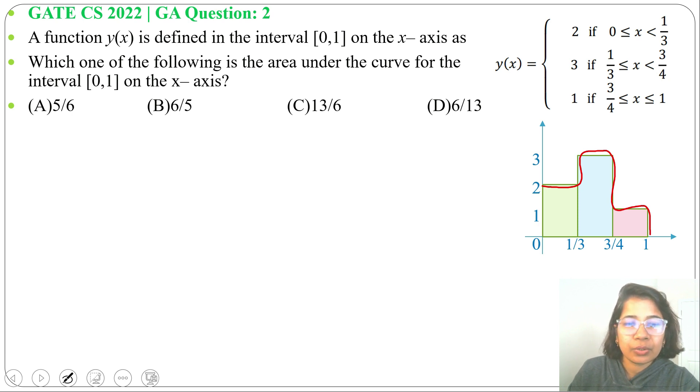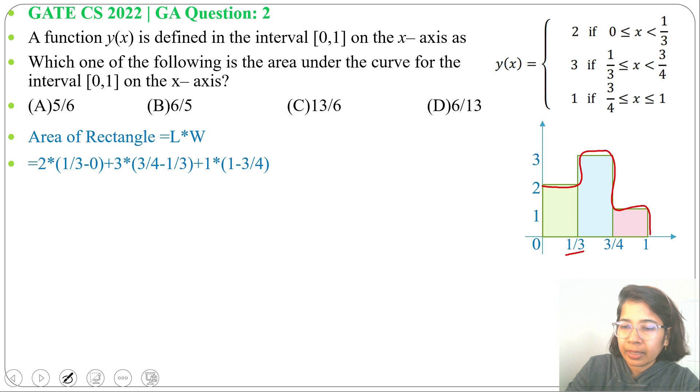We know area of rectangle equals length times breadth. Now for first rectangle area equals 2 times (1/3 - 0). Then for second rectangle area will be 3 times (3/4 - 1/3).